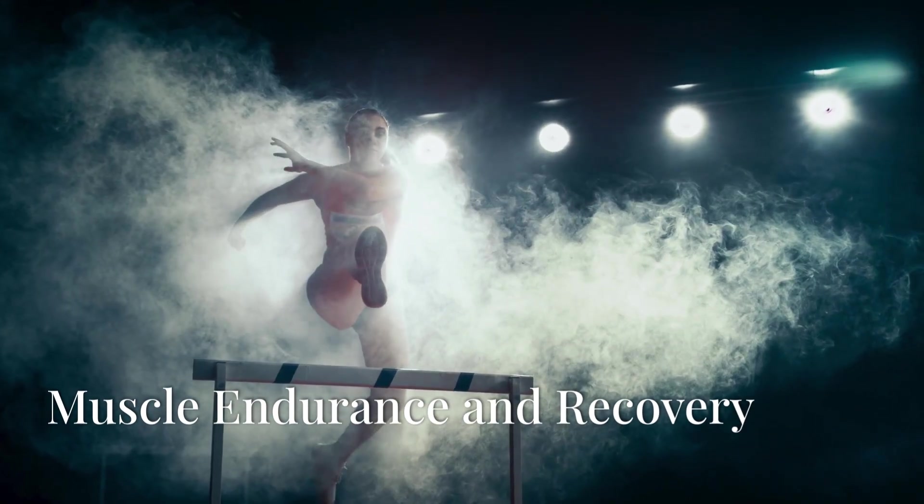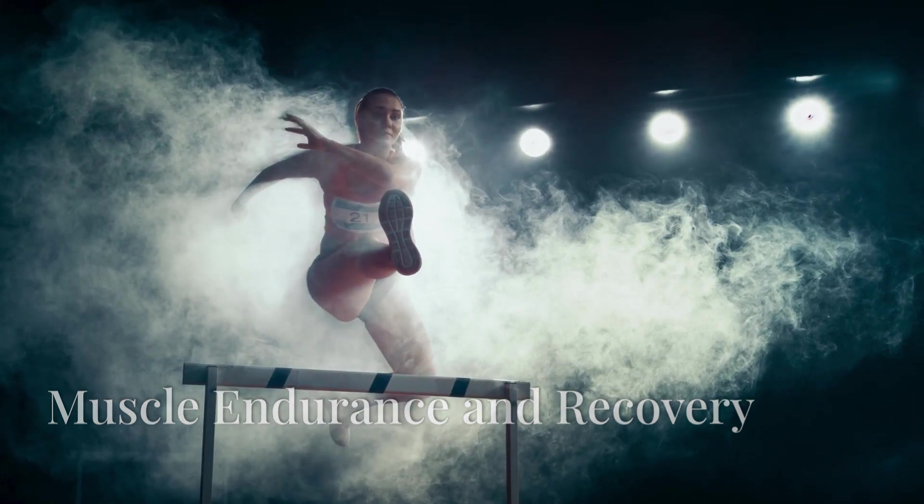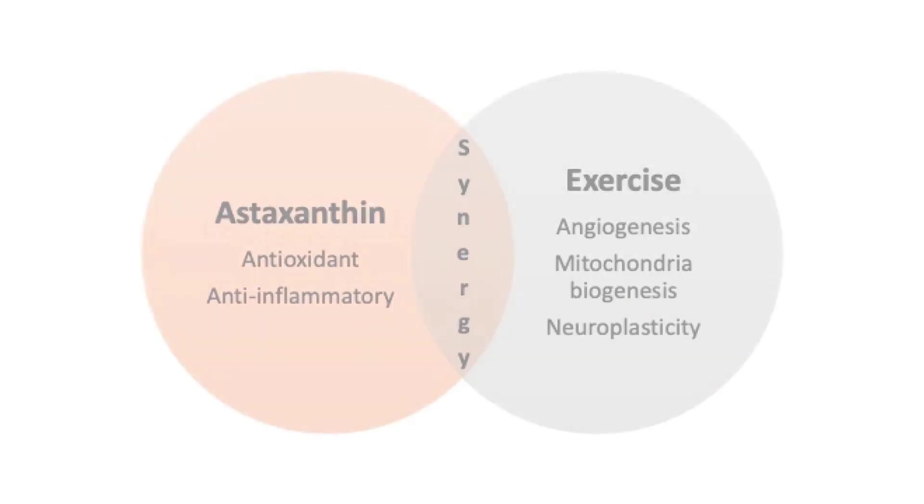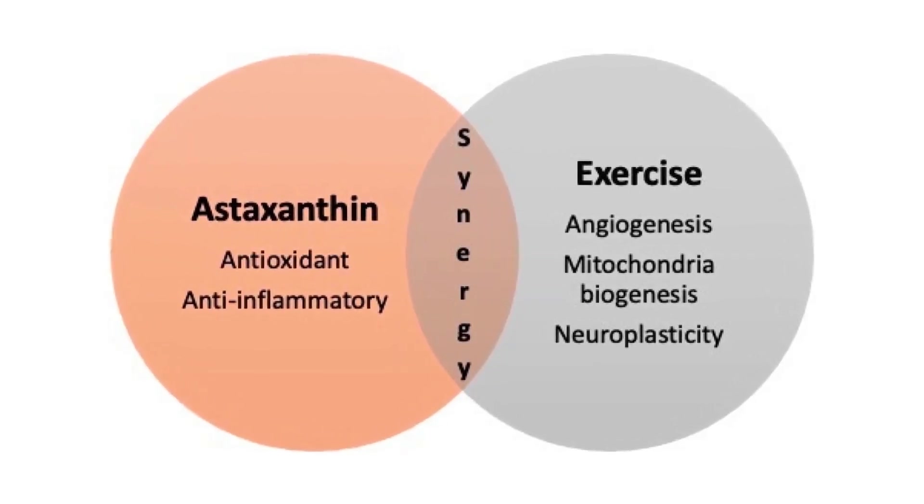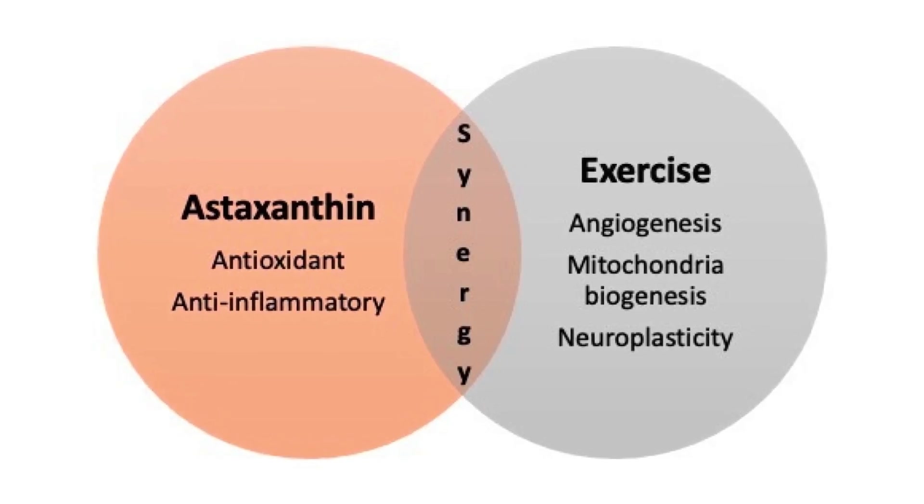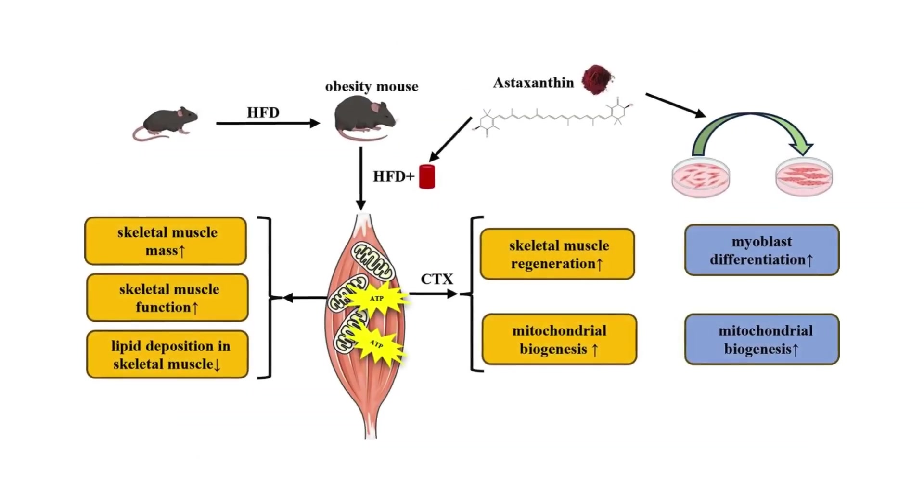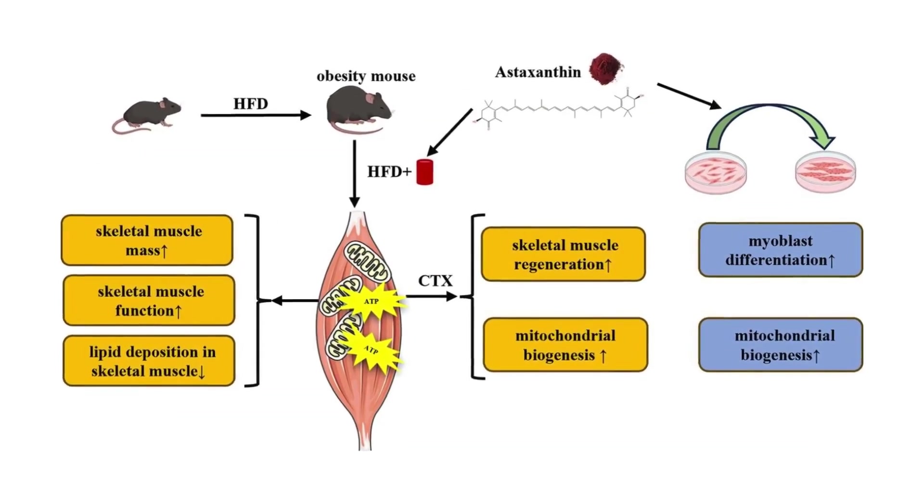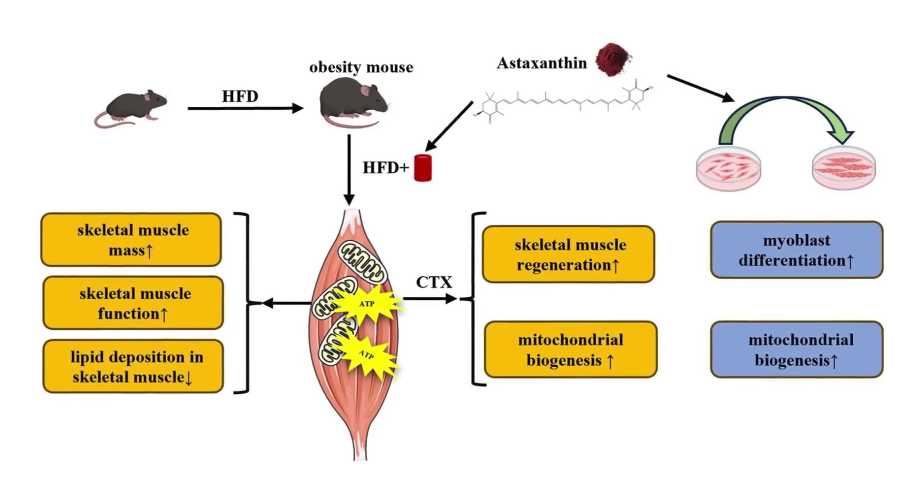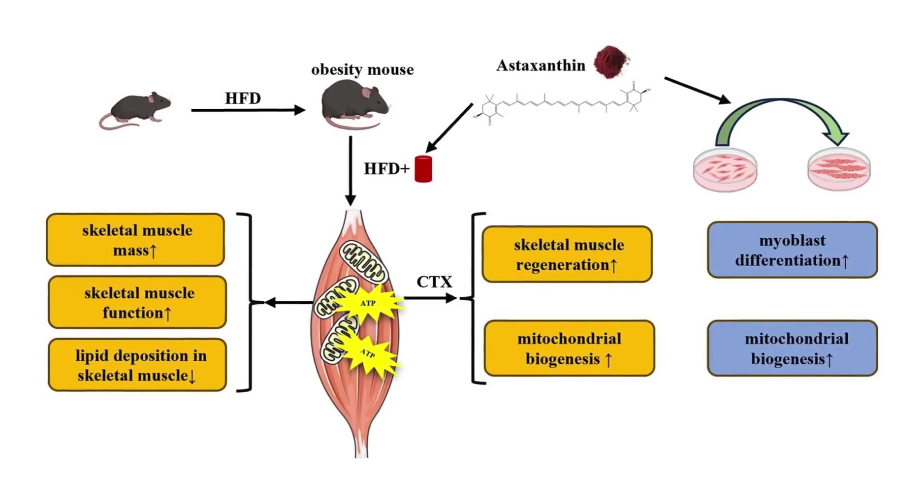For athletes and physically active individuals, astaxanthin offers the benefit of improved endurance and faster recovery. By reducing exercise-induced oxidative stress and inflammation in muscles, astaxanthin supports mitochondrial function and helps maintain muscle integrity, leading to better performance and quicker recovery times.